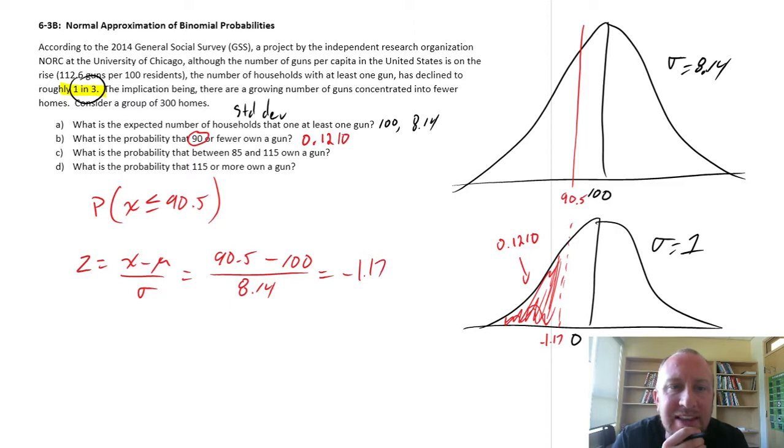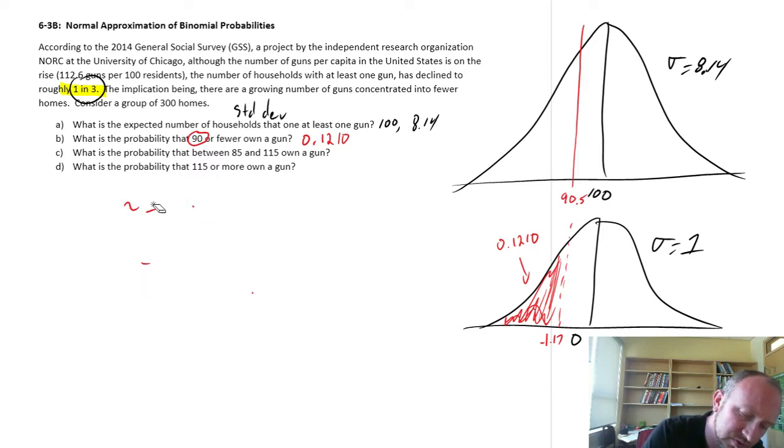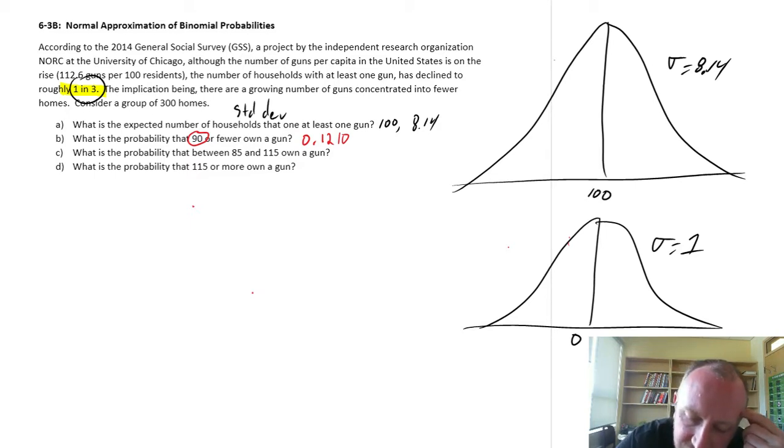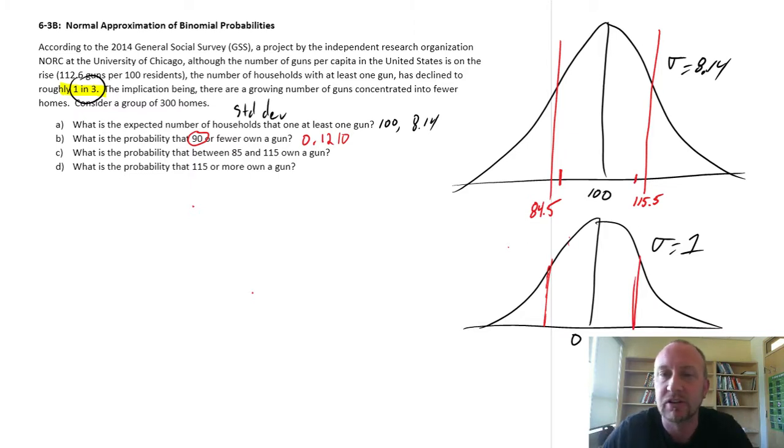Part C. What is the probability that between 85 and 115 own a gun? Okay, so let's get rid of all of this nonsense. So now I'm looking at between 85 and 115. So again, I want to include those endpoints, 85 and 115. So I'm going to include a correction factor here. This will be 84.5, because I want to include 85, which is over here somewhere. And 115, well I want to include 115, so I'm going to correct this up to 115.5.